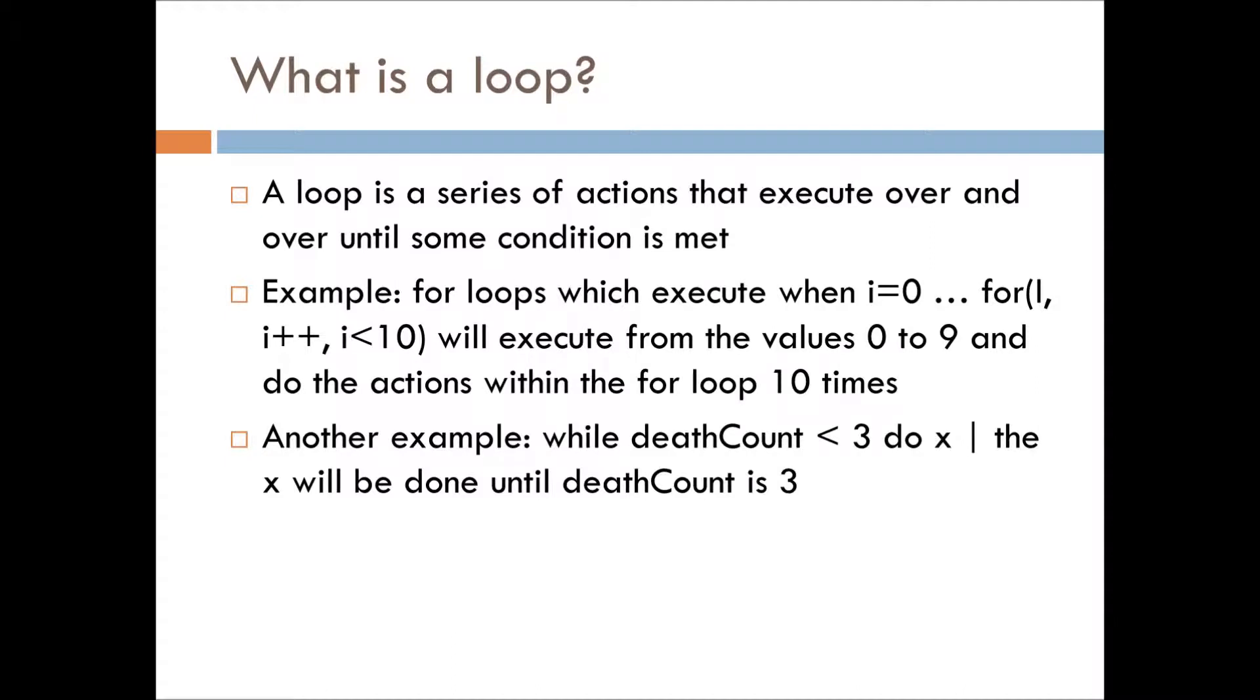Typically you have some integer, a lot of people use i, set it to 0, and then for i you increment i each time you call the loop, and you only do this until it goes from 0 to 9, in this case because we have i less than 10. It will execute 10 times because you're using a 0 index instead of a 1 index.